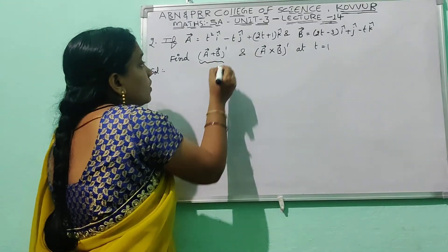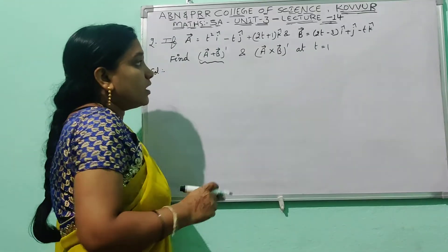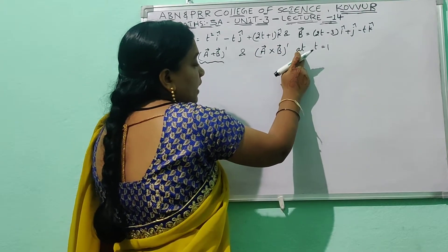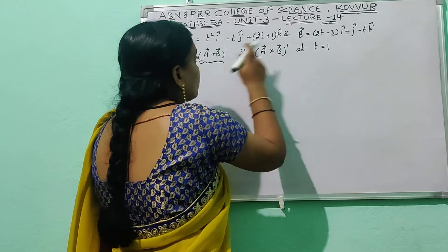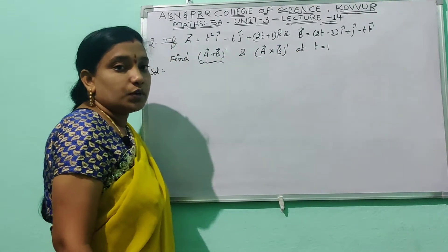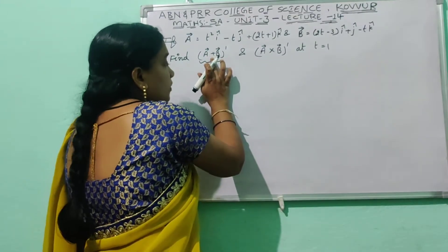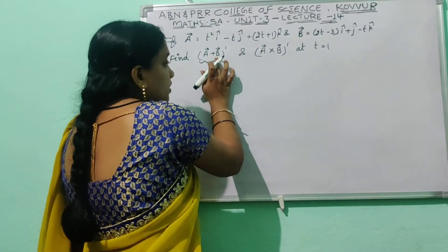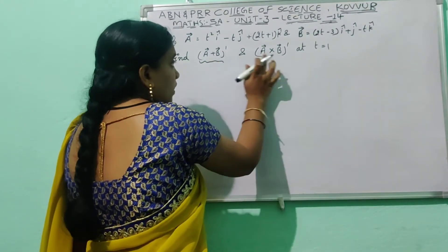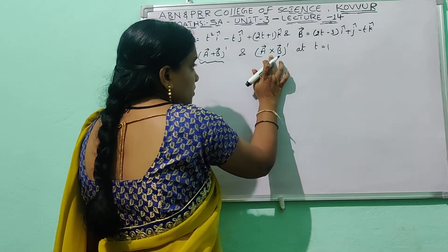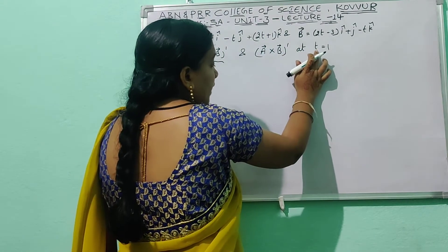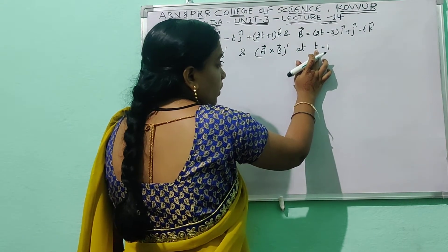We need to find the derivative of the addition of two vectors, and the derivative of the cross product of the two vectors, evaluated at t = 1. The whole dash means derivative with respect to t.